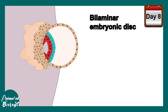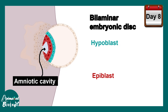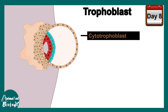The bilaminar embryonic disc is a two-layered structure consisting of the hypoblast and the epiblast. The blue layer is the hypoblast and the red layer is the epiblast, and the cavity between them is the amniotic cavity. The hypoblast consists of cuboidal cells whereas the epiblast has columnar cells, making these two layers distinct.